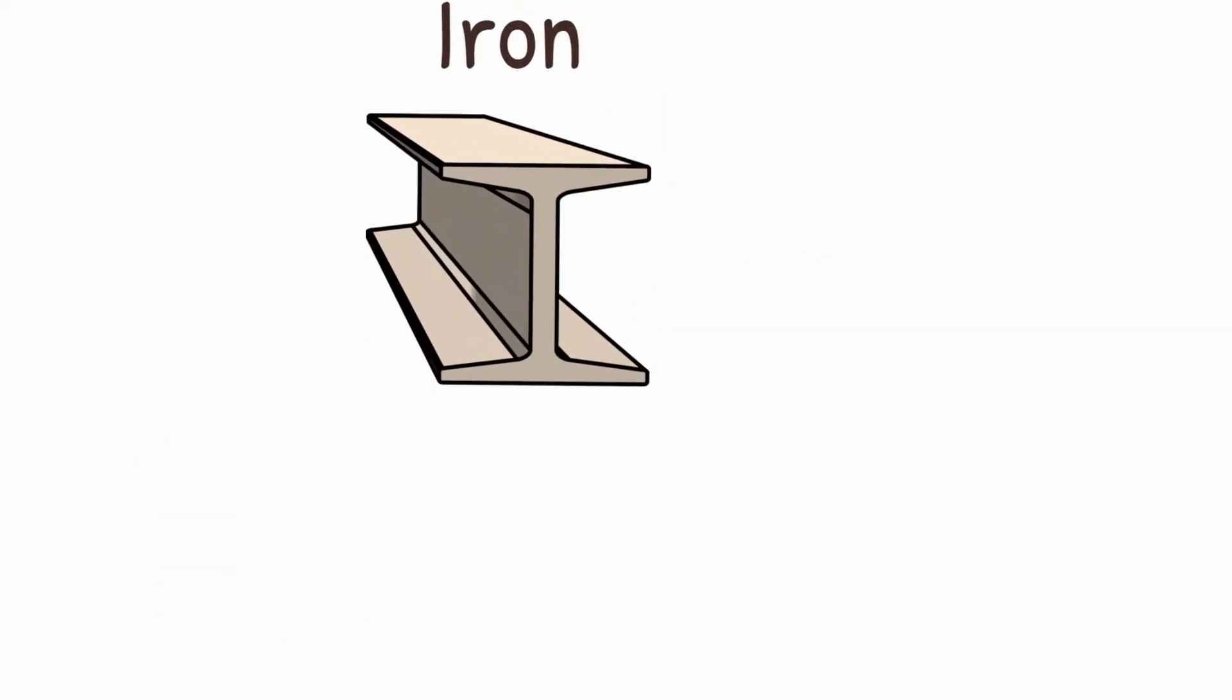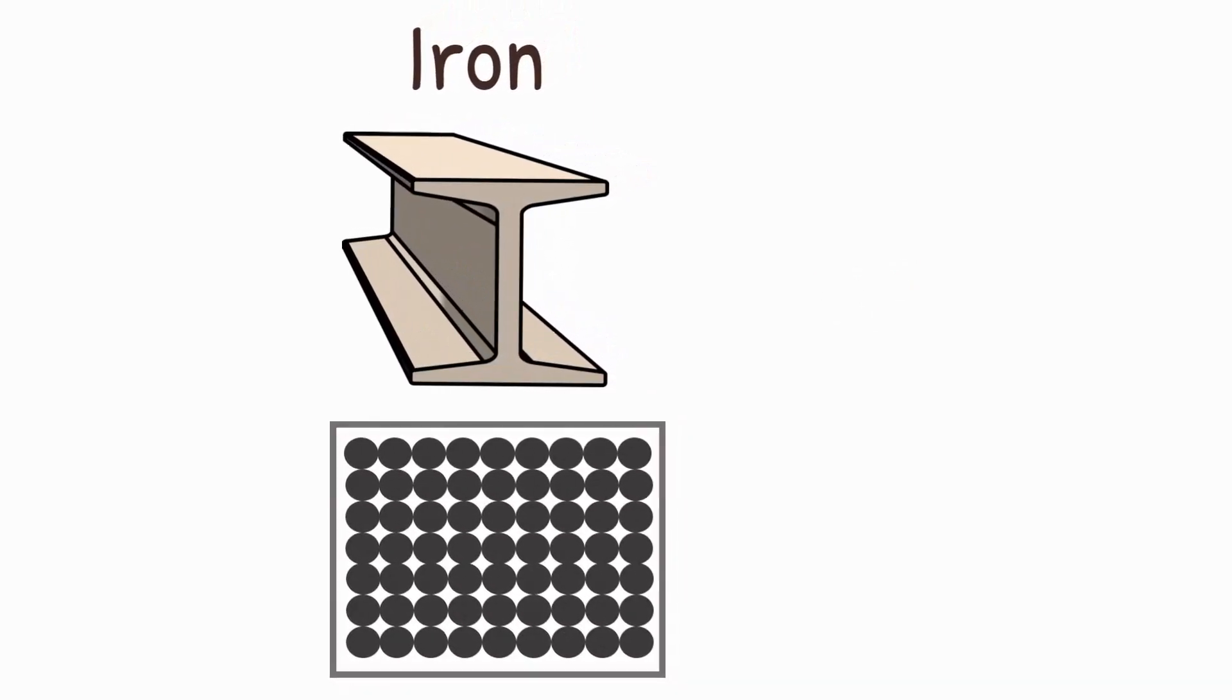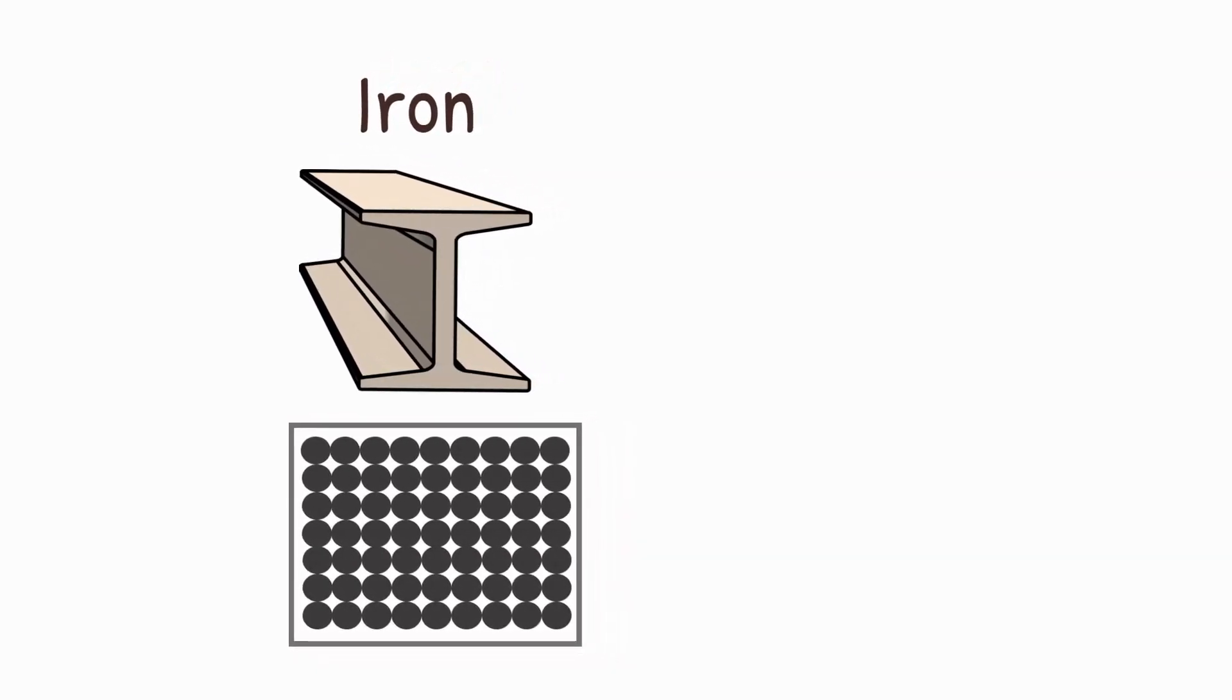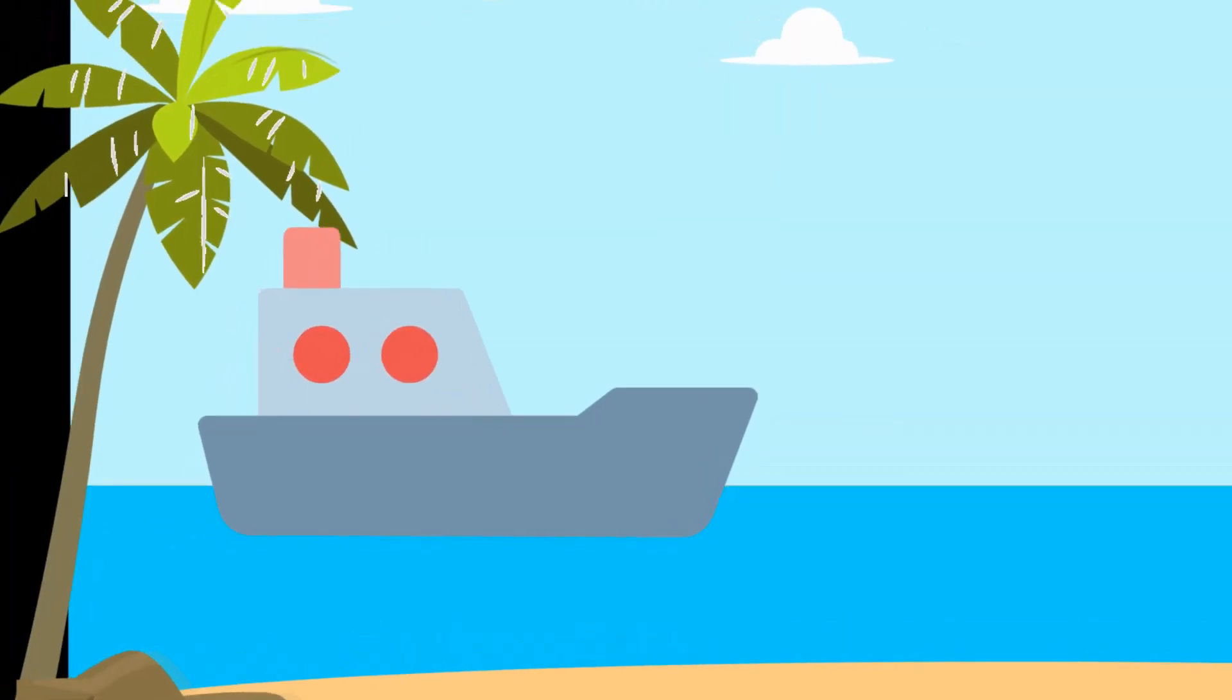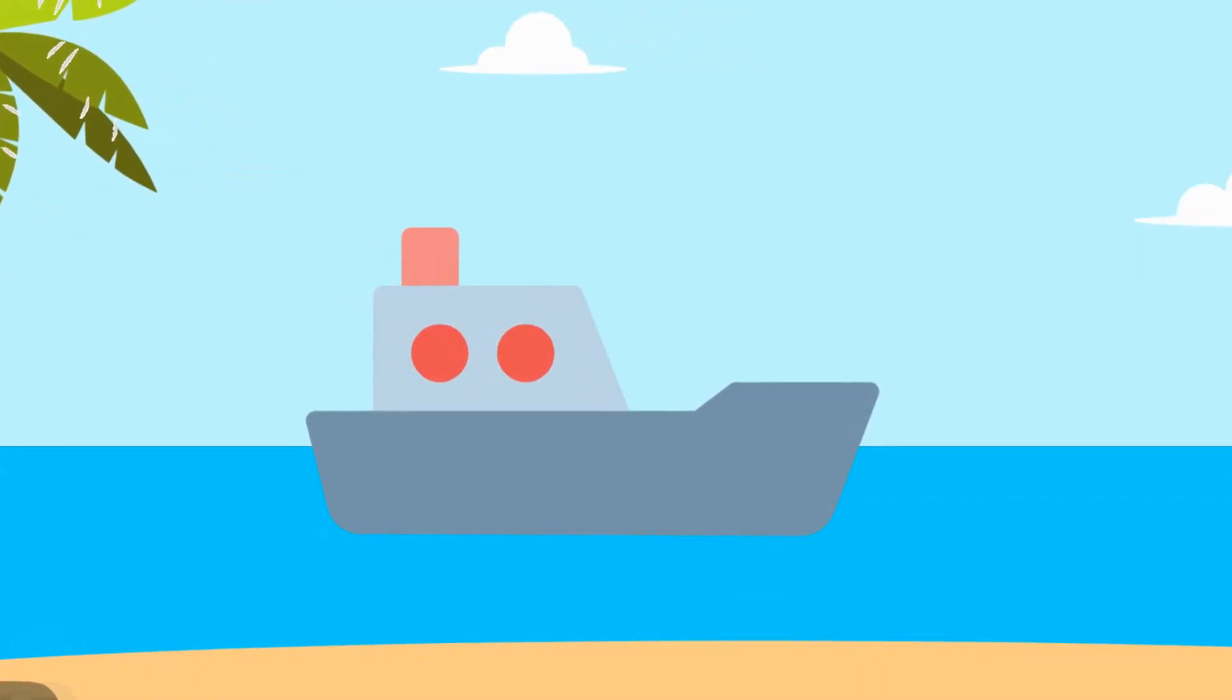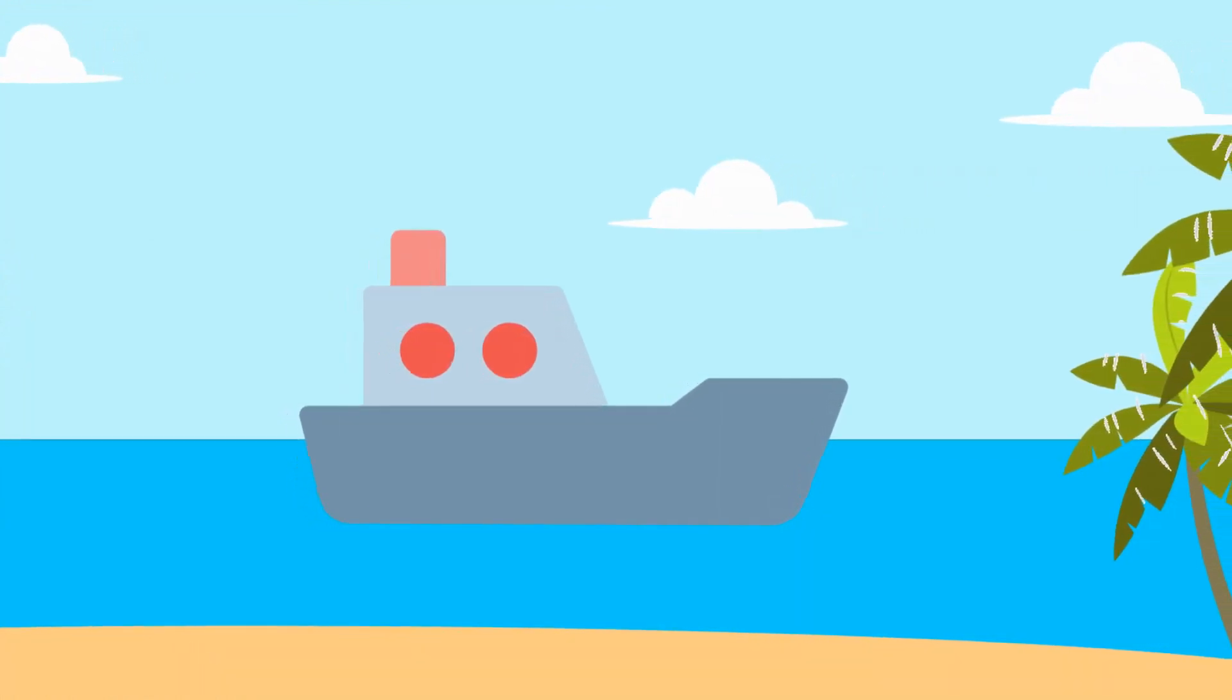Dense substances like iron have lots of large atoms packed close together. Density is critical because it determines whether things float or sink. If an object is less dense than water, such as a lump of wood, it floats. A lump of iron is denser than water and so it sinks. But if the iron is made into a boat's hull, its shape contains lots of air, which makes it very less dense and exceptionally light. The overall density of the iron plus air is less than the density of water and makes the boat float.